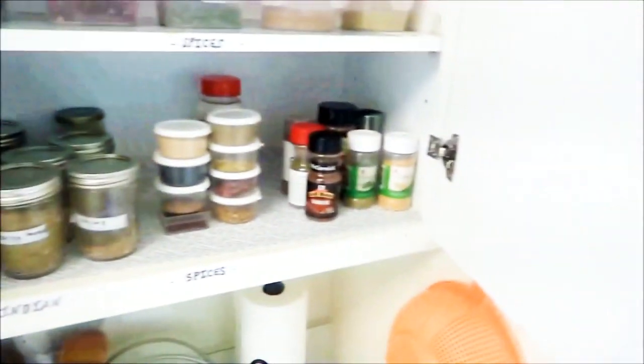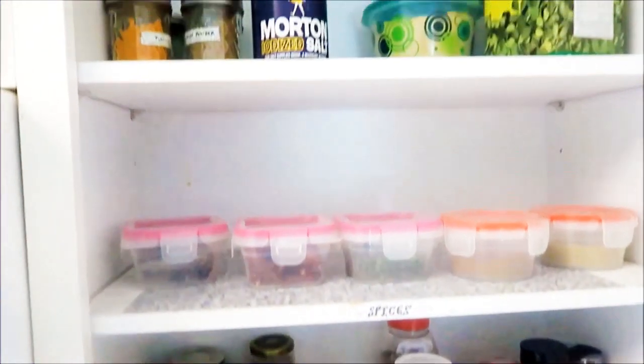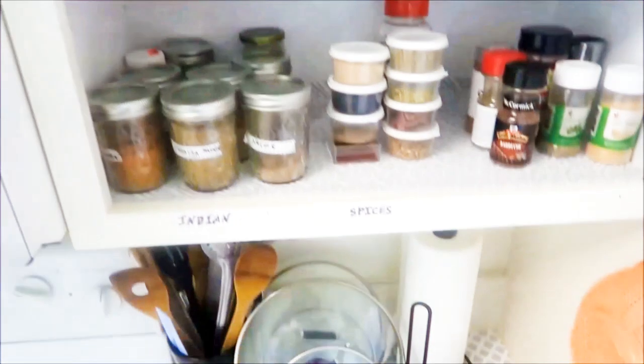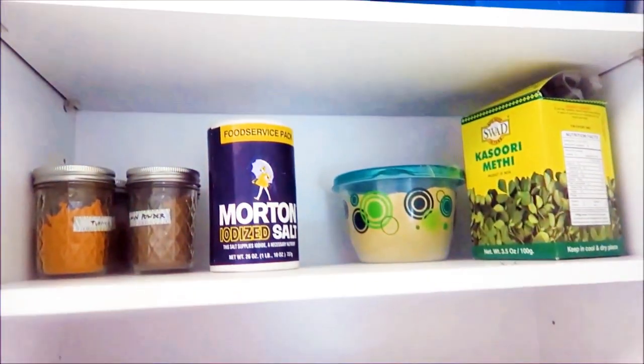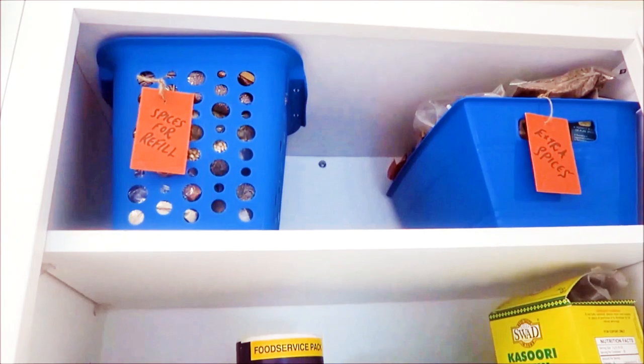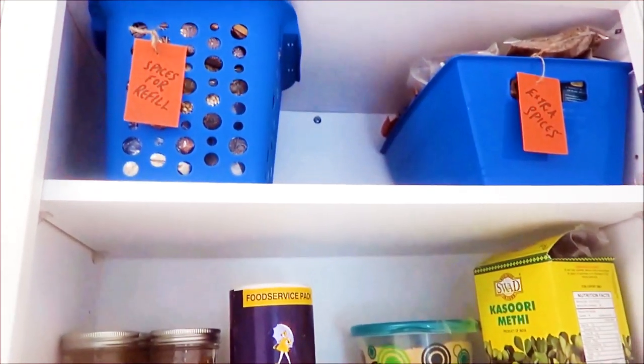In this cupboard I have more of the spices. I have labeled here for Indian spices. Since in our Indian cooking we use a lot of different kinds of spices, this entire rack and this entire cupboard is for them. All extra spices for refill are kept in the bins above.